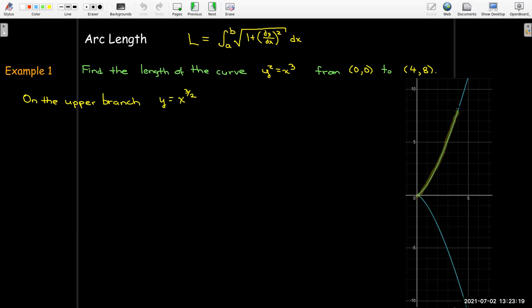So we're just looking at the upper branch so I can just take the positive square root of both sides to get y equals x to the three halves power. So using the power rule, dy/dx is three halves x to the power of one half. I'll need to square that. So let me rewrite that as three halves radical x and square it to get nine fourths x.